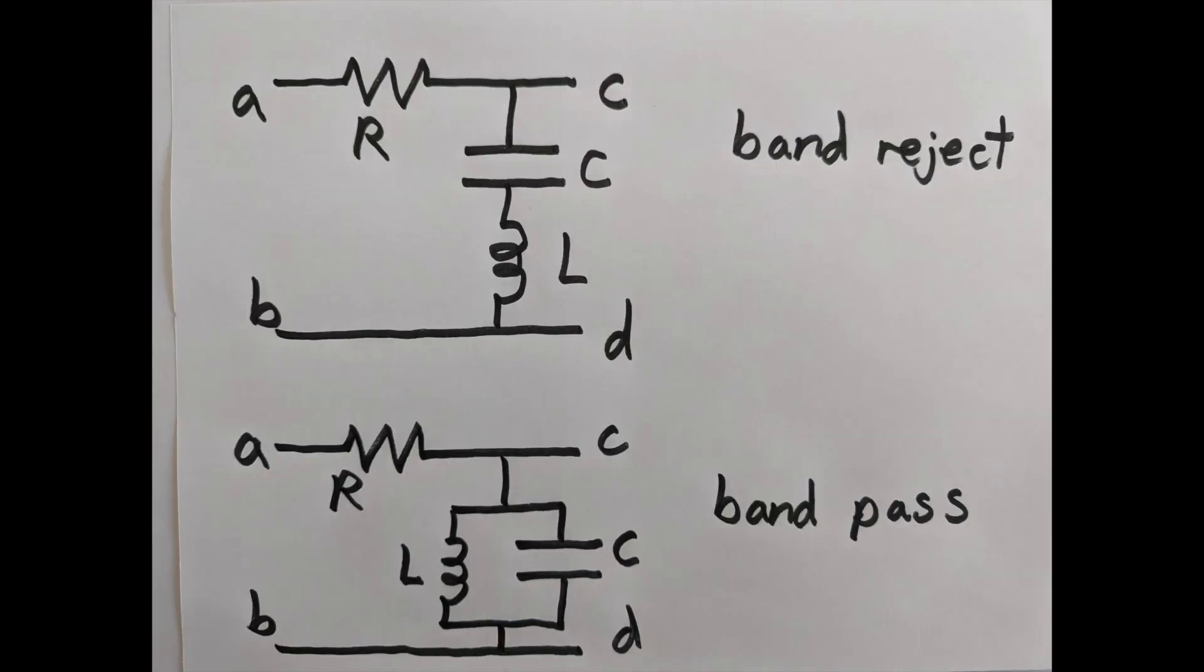Here are the last two examples. See if you can reason out for yourself why the top one is a band-reject filter and why the lower one is a band-pass filter.